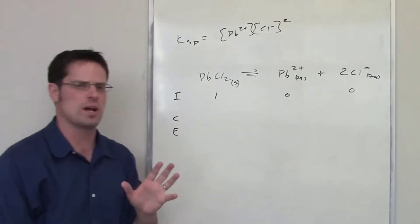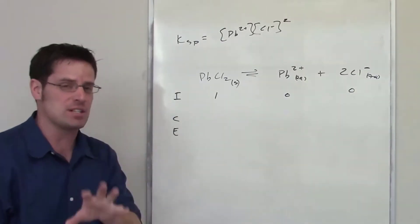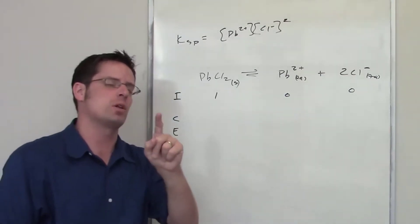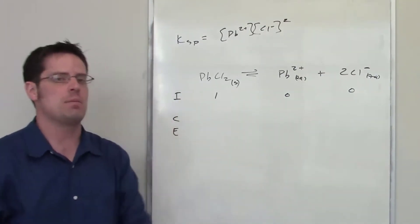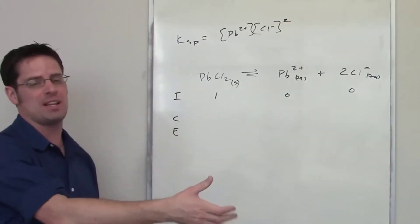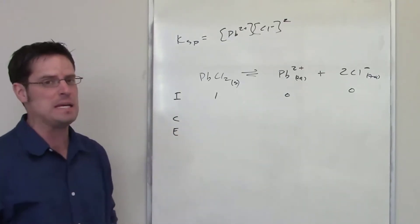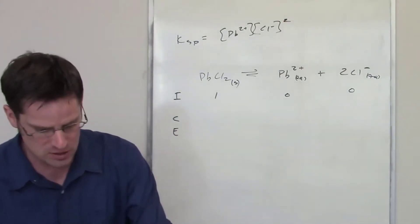Now here's the trick. Contrast this with the previous problem we did in which it gave us Ksp and asked us to solve for molar solubility. In this problem it's giving us the molar solubility and asking us to solve for Ksp. The molar solubility that it gives us, by the way, is 1.6 times 10 to the negative 2 molar.